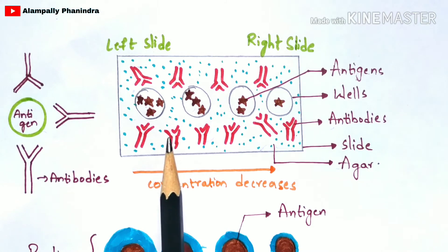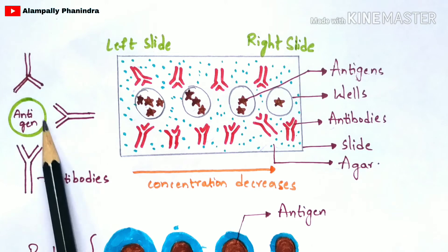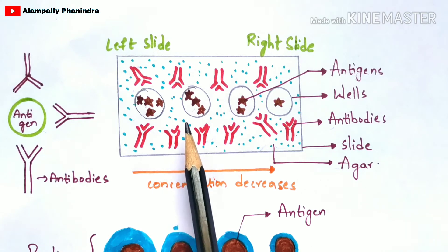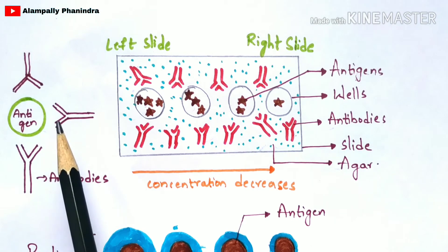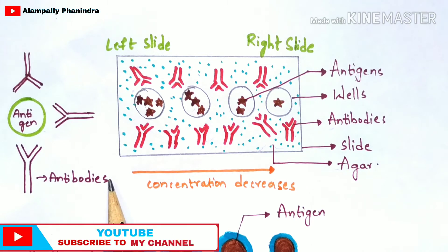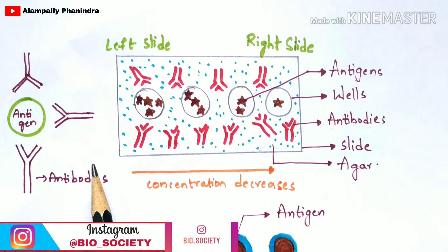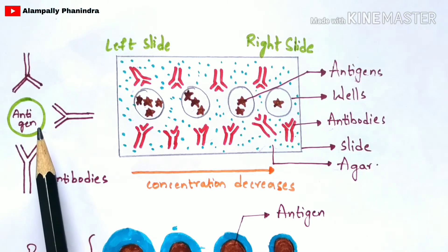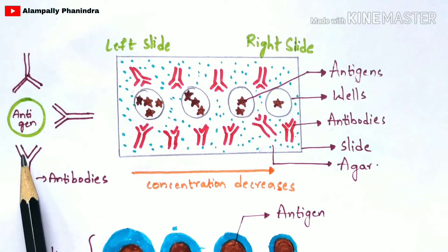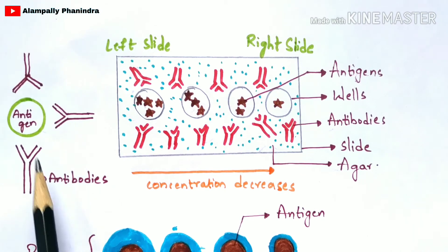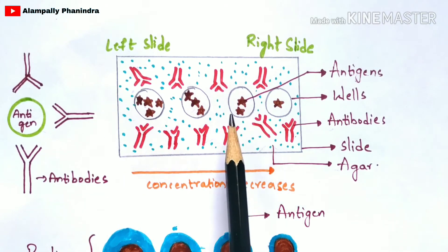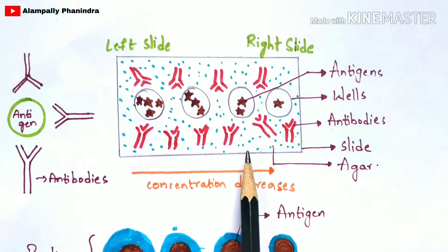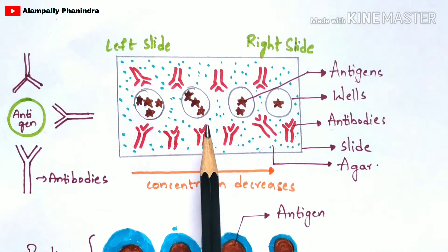We know that there is an interaction which occurs between antigen and antibody, called antigen-antibody interaction. Antigens are foreign materials that enter your body from the external environment, and they cause disease. To prevent this, antibodies play a major role — they are released from white blood cells (WBC). These antibodies bind toward the antigen that has entered from the external environment, forming the antigen-antibody complex. The same process occurs in the slide, where the antigen and antibody interact.